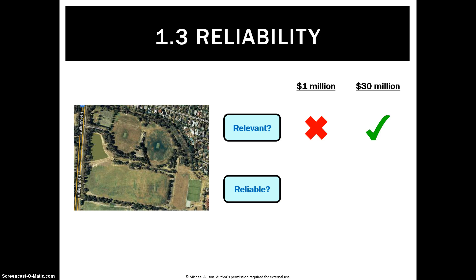Why 30 million? Because it'll help us make decisions — remember, relevance was all about decision making. What about reliability? We said: no guesses, no estimates, and documents. One million dollars is very reliable — we'll have a receipt somewhere, an invoice that says we bought these grounds for one million dollars. What's not reliable is 30 million dollars — where does that figure come from?